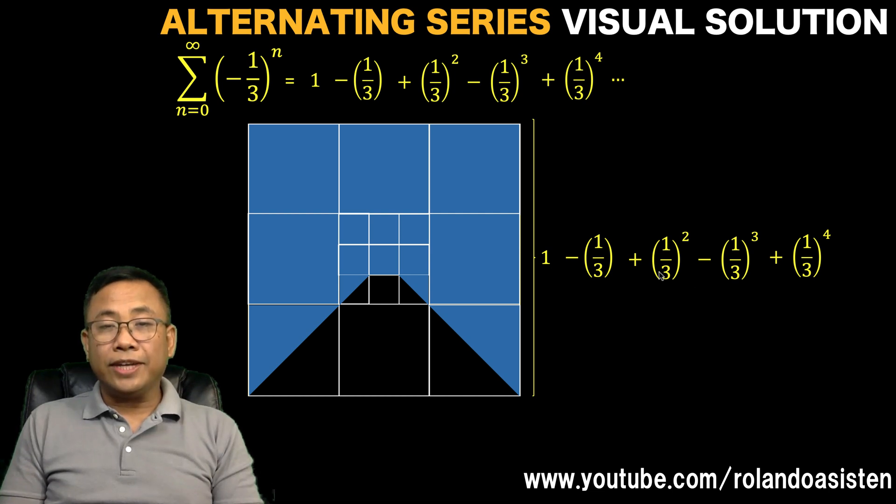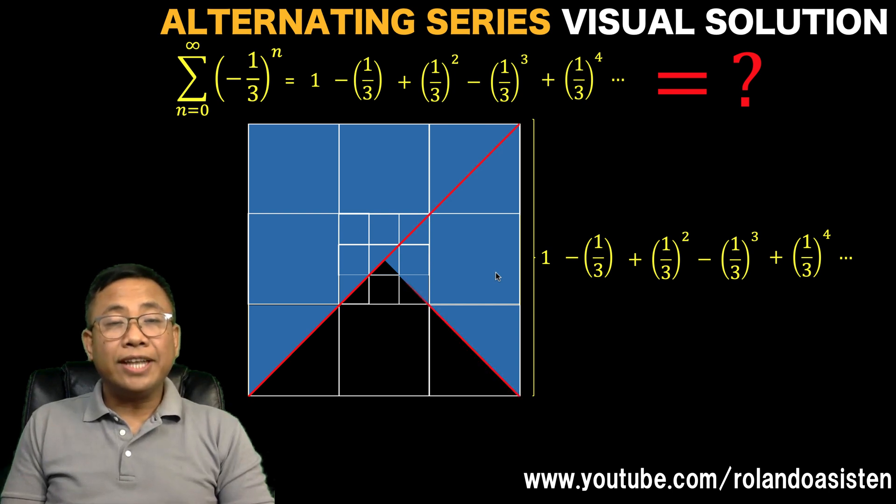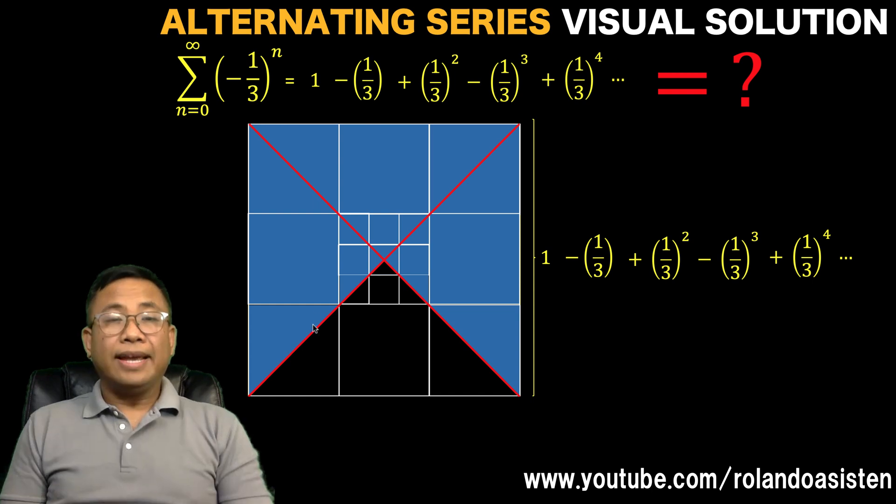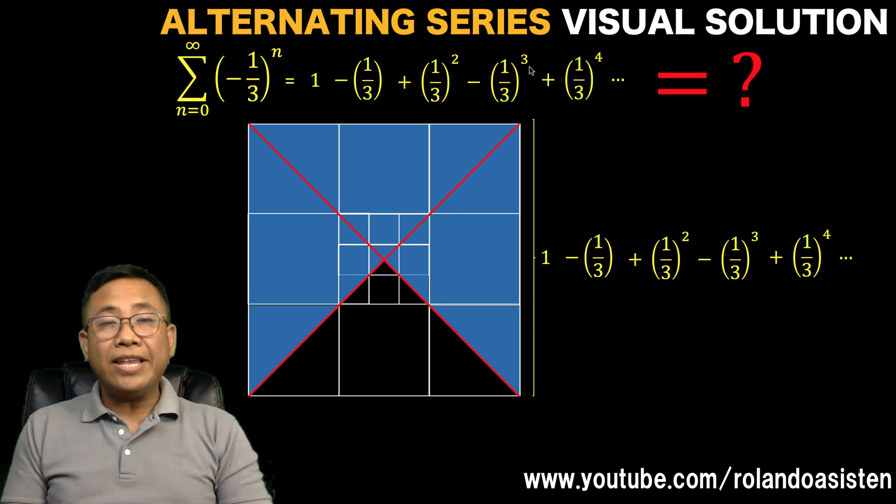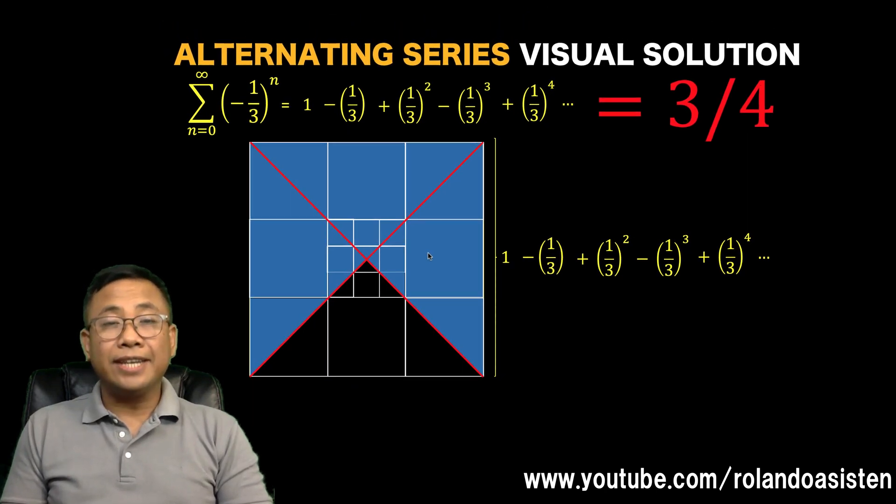Notice that if we continue the pattern, we'll be forming a shape that looks like this. The blue parts represent the value of our series. And what's the value of this blue area? Notice that I can divide the original square into four equal parts. And the blue shaded region that represents the value of our series is three parts out of four parts, or 3/4. And so the value of this alternating series is 3/4 solved visually.